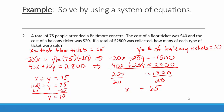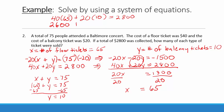Now let's check our answer by putting both the x value and the y value into the second equation to see if it makes a true statement. 40 times 65 plus 20 times 10 should equal 2,800. 40 times 65 is 2,600, plus 20 times 10 is 200, and 2,600 plus 200 does equal 2,800. All problems solved using systems of equations can be checked by plugging both x and y values into both equations.